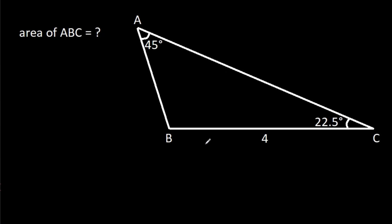In this video, we have been given that BC is 4, angle BAC is 45 degrees, and angle ACB is 22.5 degrees. We have to find the area of triangle ABC.